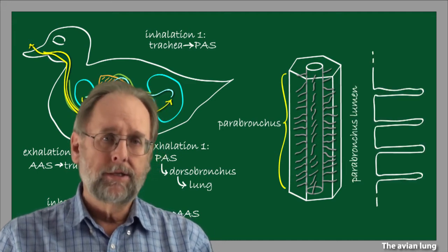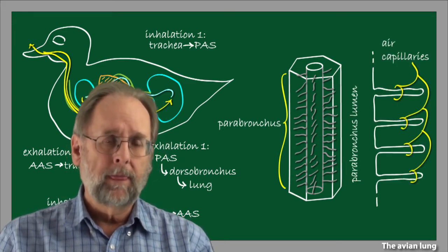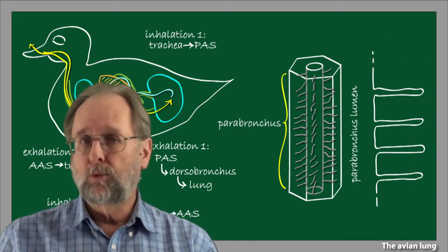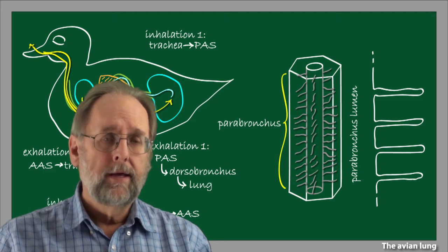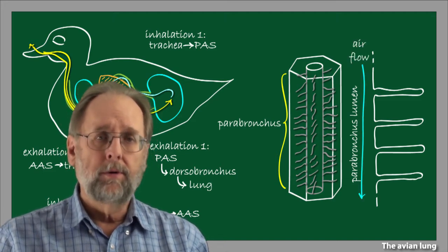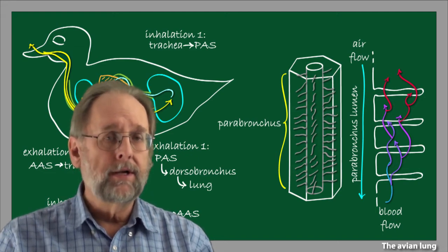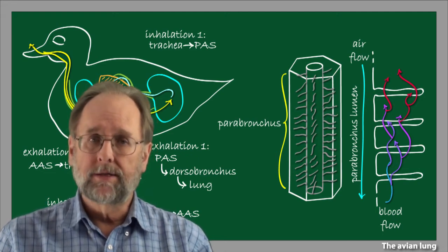Here we see a close-up depiction of some air capillaries. Gas exchange between the blood and air actually takes place within the air capillaries. Air flows downward through the parabronchus, and deoxygenated blood percolates upward surrounding the air capillaries, becoming oxygenated as it goes.